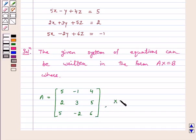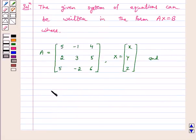X equals the column vector x, y, z, and B equals the column vector 5, 2, minus 1.